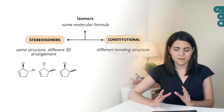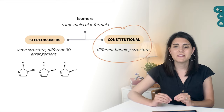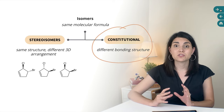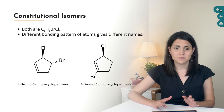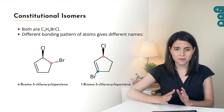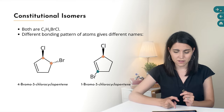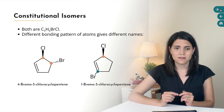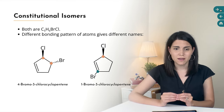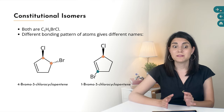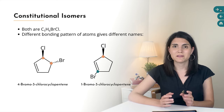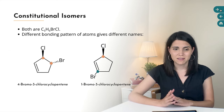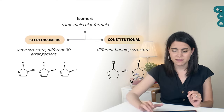Constitutional isomers, on the other hand, have an entirely different molecular structure. These two molecules are constitutional isomers. They do have the same molecular formula, but the bromine is on a totally different carbon in the second molecule, which gives it a totally different name from the first one. It's called 1-bromo-3-chlorocyclopentene. So those are constitutional isomers.